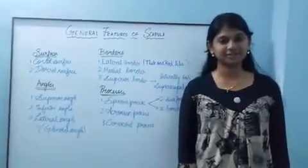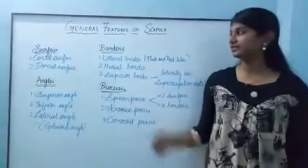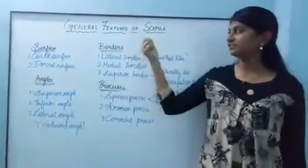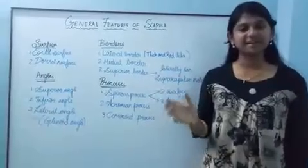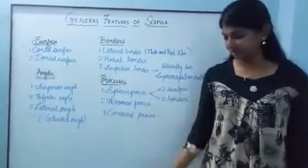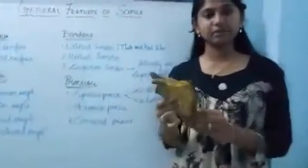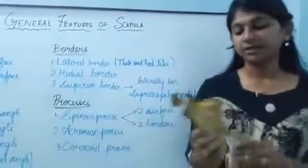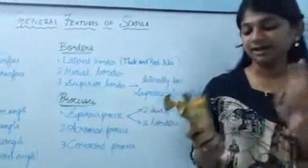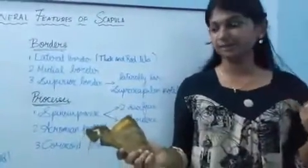I am Jay Shree from Monticelli Institute of Medical Sciences. Today we are going to discuss about general features of scapula, its side determination and its anatomical position. Scapula is a flat bone which is present on the posterolateral aspect of the thoracic cavity. There are two scapulas — the right side scapula and the left side scapula.